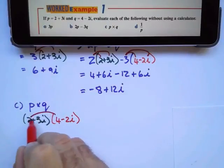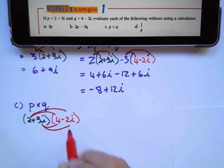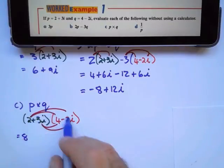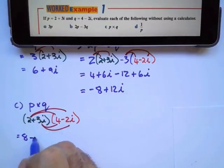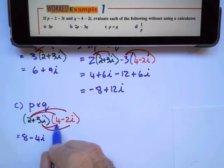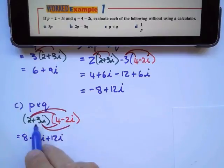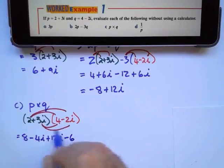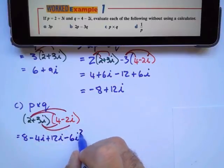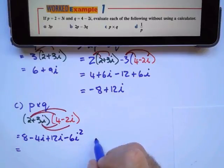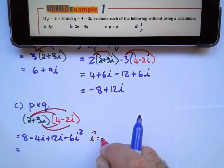Now if I multiply, 2 times 4 equals 8, 2 times negative 2i is negative 4i, 3i times 4 is plus 12i, plus 3 times negative 2 is negative 6, i times i is i squared. If you can remember correctly, i squared equals negative 1.